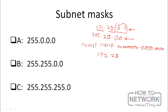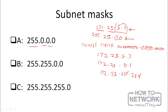Expanding 255 gives all ones, so the first two octets are all ones and the last two are all zeros. This means the first two octets represent the network while the last two represent the host. So the computer with address 172.23.5.7 is on the 172.23 network with a unique host address of 5.7 — it's on the same network as 172.23.0.1 or 172.23.255.234, or anything starting with 172.23.